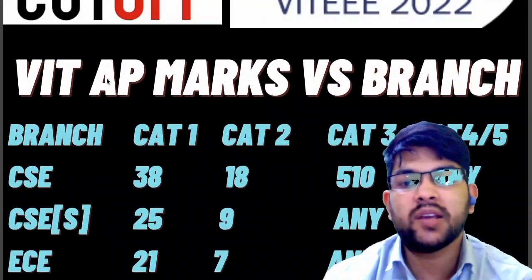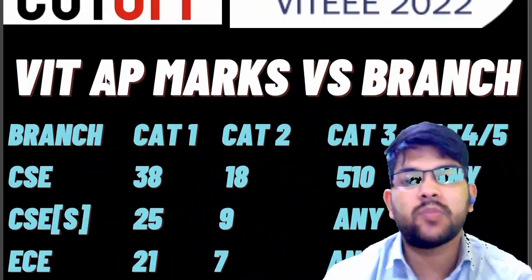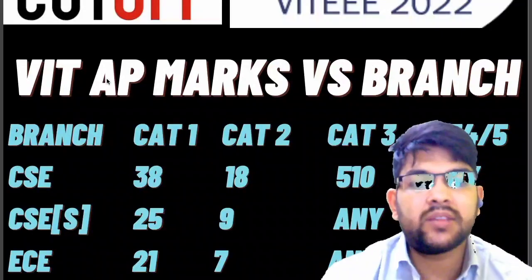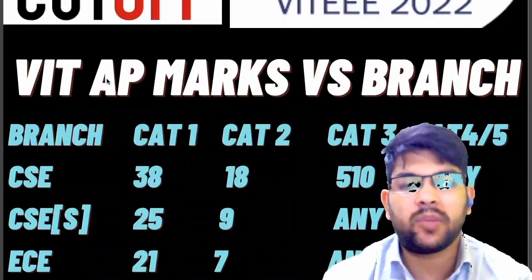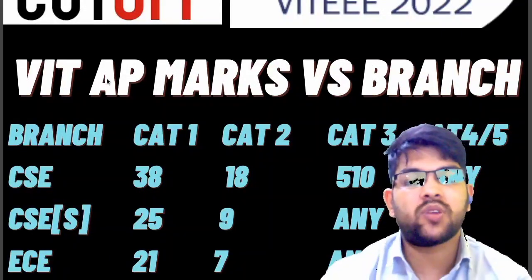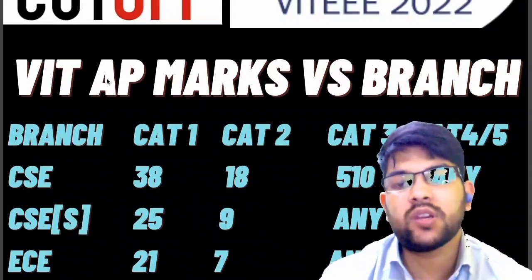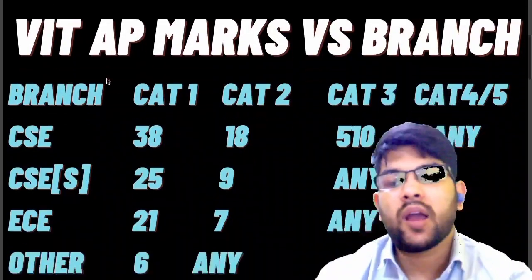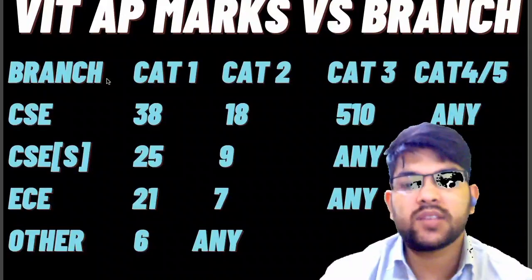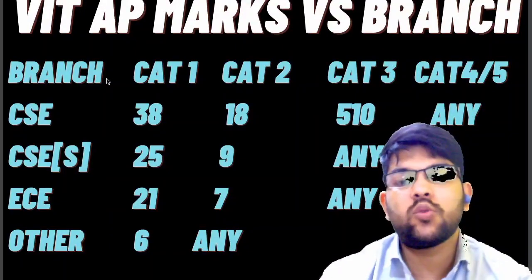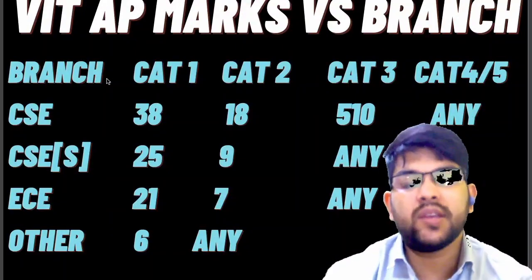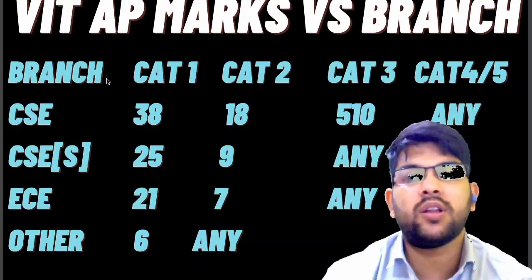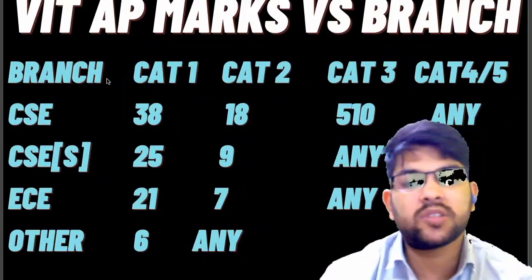For CSE specialization at VIT AP: 25 marks for Category 1, 9 for Category 2, and for Category 3 you can get at any rank. For EC: 21 marks for Category 1, 7 marks for Category 2. For other branches: 6 marks for Category 1 and Category 2, and you can get at any mark beyond that. This was the AP campus marks versus branch overview.